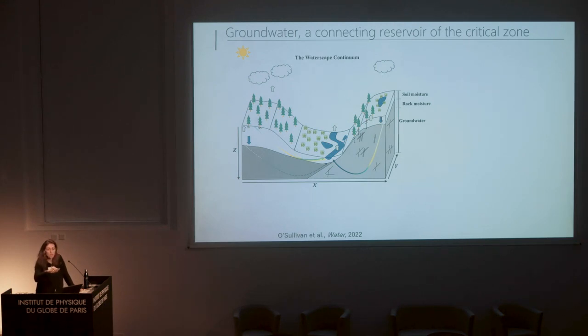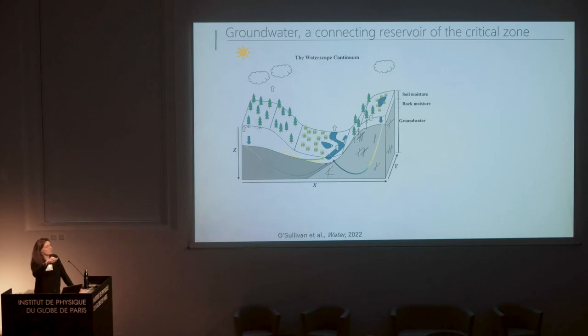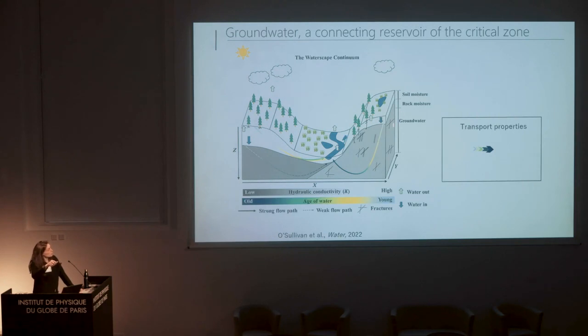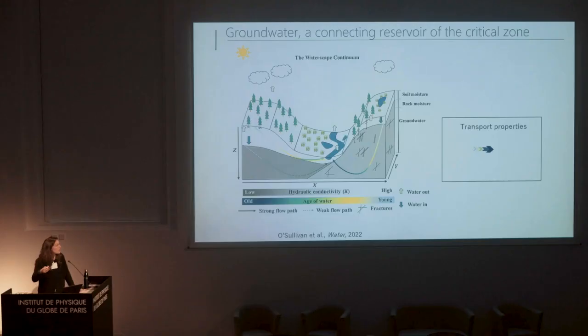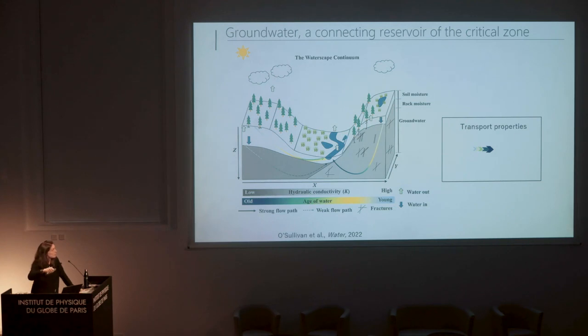I like to think of groundwater as the reservoir that connects all the critical zones. It connects the upper part of the catchment — the top of the hills — to the valleys, and so it's connected to the vegetation as well, and of course it's drained by rivers. The way that water is transported from the top of catchments to the valleys depends on the characteristics of the aquifer, the so-called transport properties. Either the media is transmissive and water is transported very quickly, or less transmissive — this really depends on the characteristics of the aquifer below our feet.